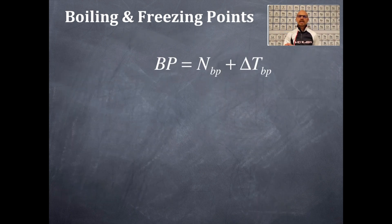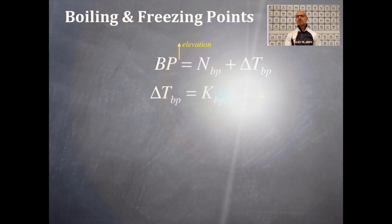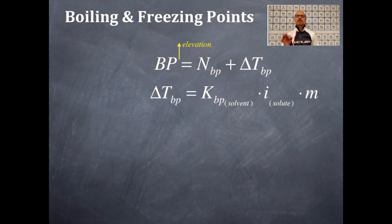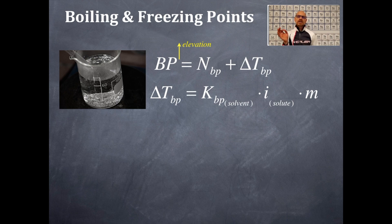The boiling point is equal to the normal boiling point plus the change in temperature of the boiling point. This is always going to be a boiling point elevation. If you add something to the solvent, it will increase the boiling point always. The change in temperature of the boiling point is equal to the constant for the boiling point for the solvent, plus the I for the solute — that's the Van't Hoff factor, which we've already discussed in a previous video — times the molality. If I were to add any solute to water, I will actually increase the boiling point of the water. That's why we add salt to water to increase the boiling point.